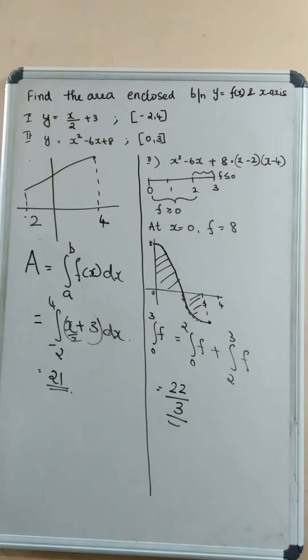The first problem is given as: the curve is given as y is equal to x by 2 plus 3 in the interval, closed interval minus 2, 4.